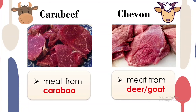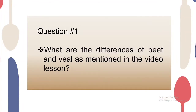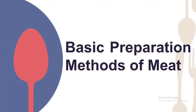For our first question, write on your piece of paper: Number one — what are the differences between beef and veal as mentioned in the video lesson? You will submit your answer via Google Classroom. There is also a question number two coming up, so make sure you finish. Let us now move on to the basic preparation methods of meat, which is our topic number two.